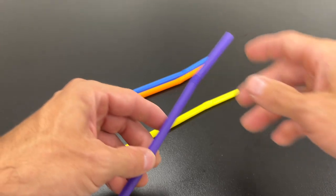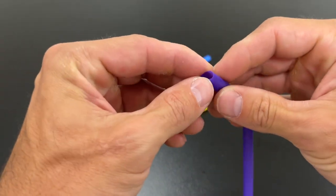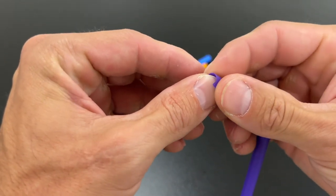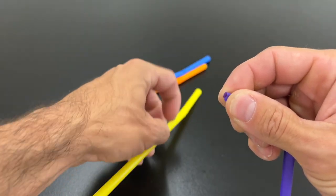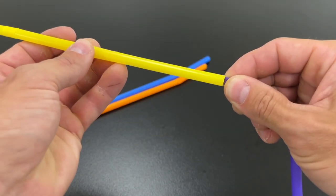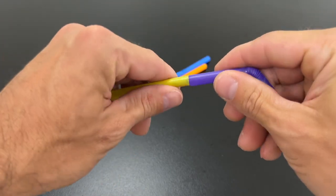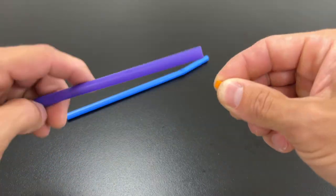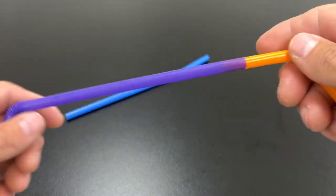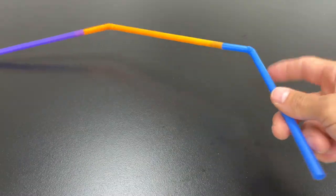Take one of those bendy straws and find the smaller end, kind of collapse it in on itself, and then take the longer end of another one and just fit them together. Just repeat this step and continue connecting them together until you have one complete square.